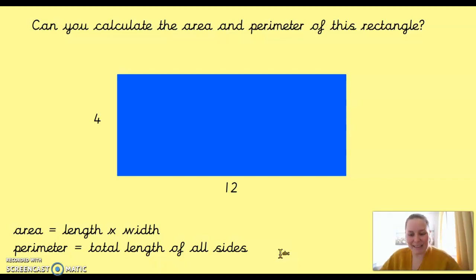OK, so hopefully, we've got there. The formulas are propped up here. Hopefully, you remembered them. Let's go through what the answer would be. So, to find out the area, which, remember, is the whole space inside the shape, we're going to do length times width. OK, so we're going to do 4 times 12.